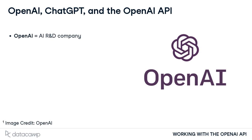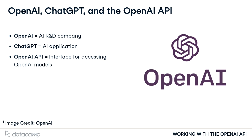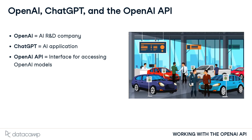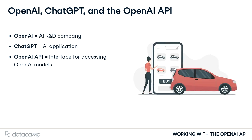OpenAI is a company that researches and develops artificial intelligence systems. One of their most famous developments is ChatGPT, which is an application that allows users to communicate with an AI-powered chatbot to ask questions, perform tasks, or generate content. The OpenAI API allows individuals or organizations to access and customize any of the models developed and released by OpenAI. If OpenAI was a car manufacturer, ChatGPT would be their shiny new sports car that people can walk into a dealership and test drive. The OpenAI API would be like the system customers could use to customize and order any car from the manufacturer's catalog.